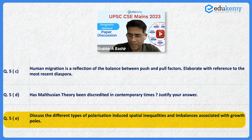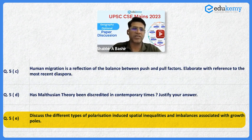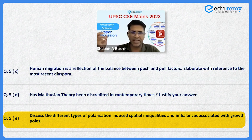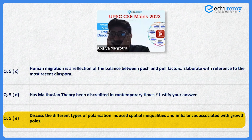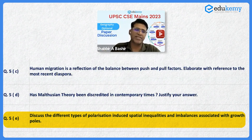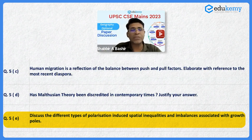Types of polarization: number one, industrial agglomerations are one type of polarization. Development of transport hubs — there are ports, there are railways, there are airports — that is one type of polarization, whereas other areas do not have connectivity. So industrial agglomeration is one type of polarization, and concentration of transport hubs is another type of polarization.